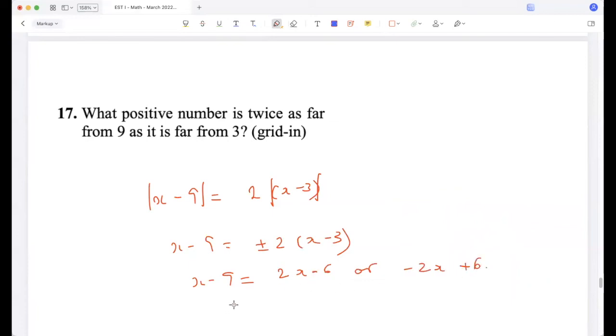So if you work with x - 9 is 2x - 6, then x is -3. So we want x to be positive. And if you work with x - 9 is -2x + 6, then 3x is 15. So x is 5. Yeah, so the right answer here is x equal to 5.